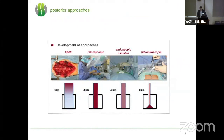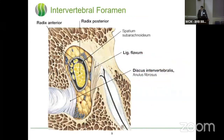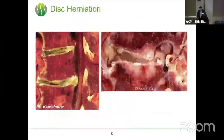The intervertebral foramen, especially for transforaminal surgery, is an important issue. You see that the nerve root normally comes out on the top of the neuroforamen, but you have to pay close attention to the sagittal view of the foramen area, because sometimes you have nerve root pathology or a low-descending nerve root.